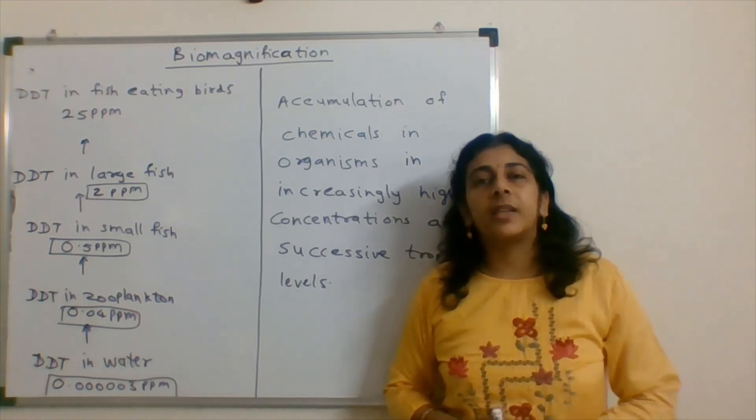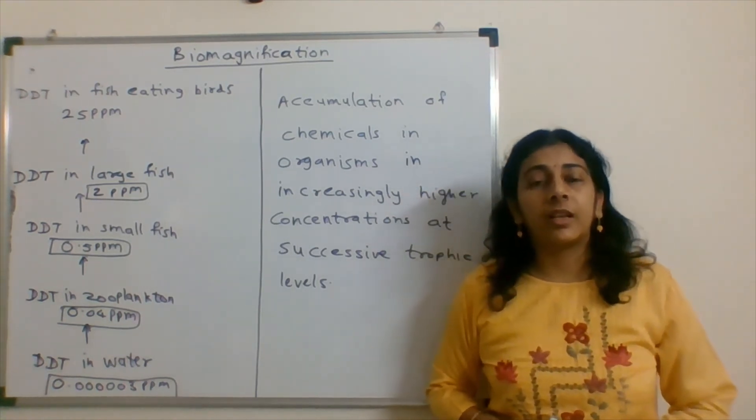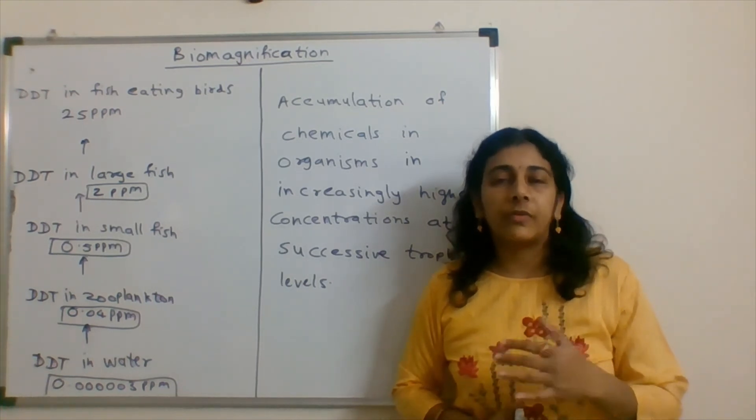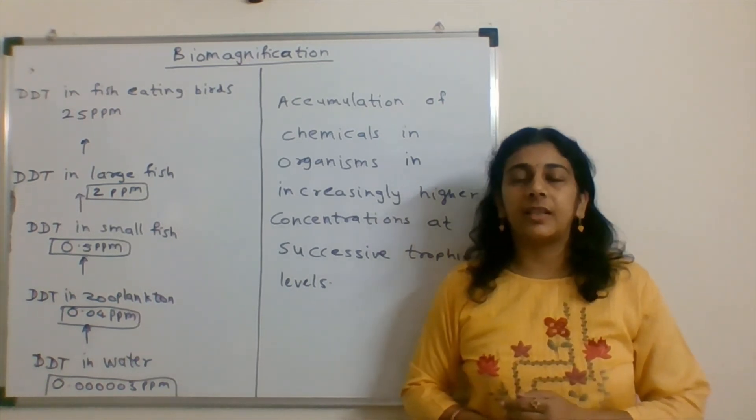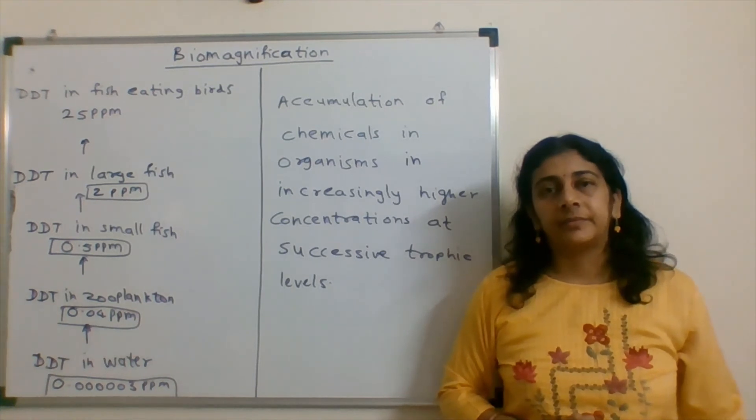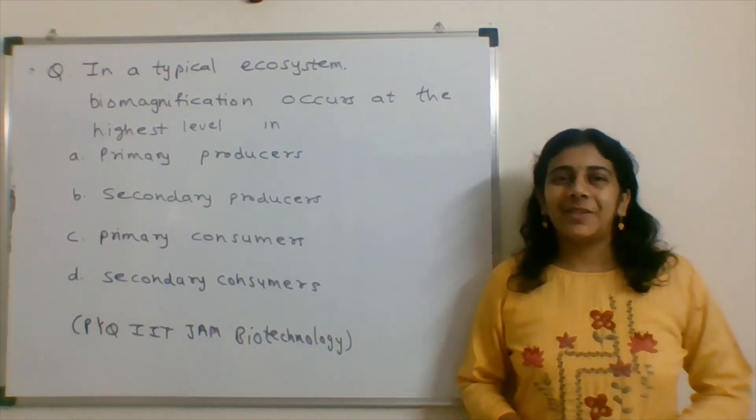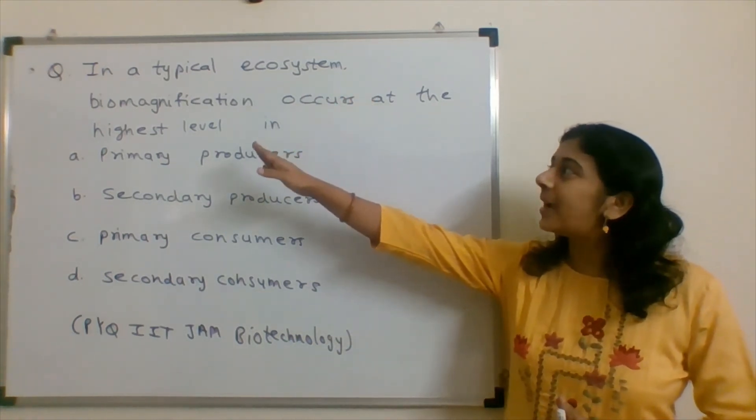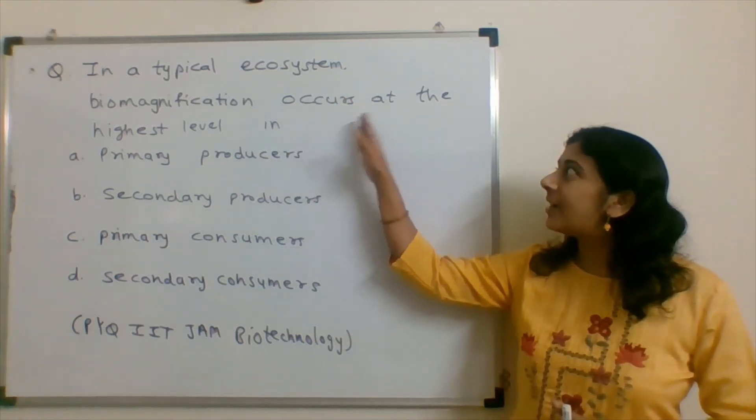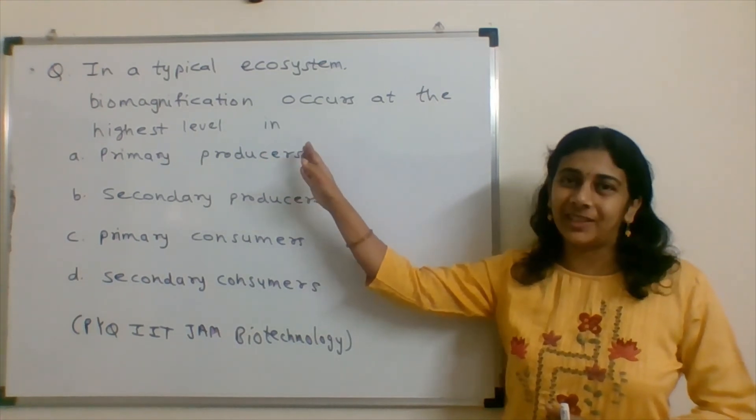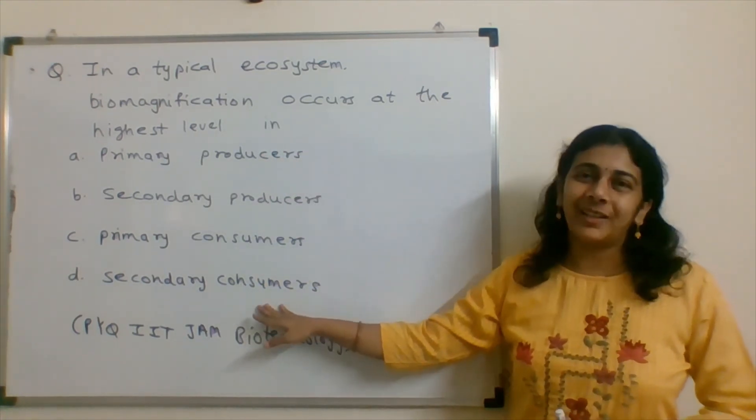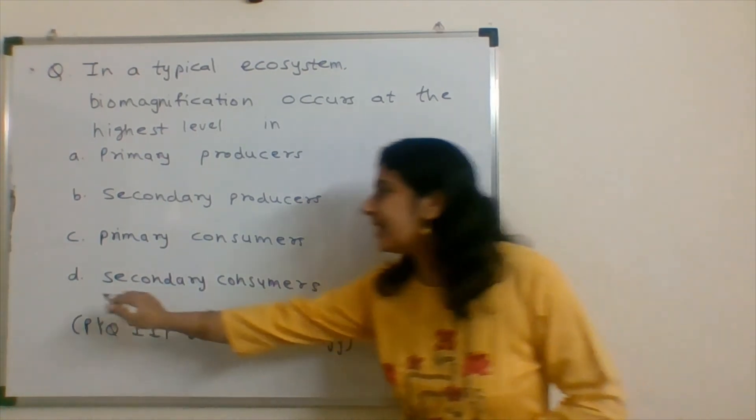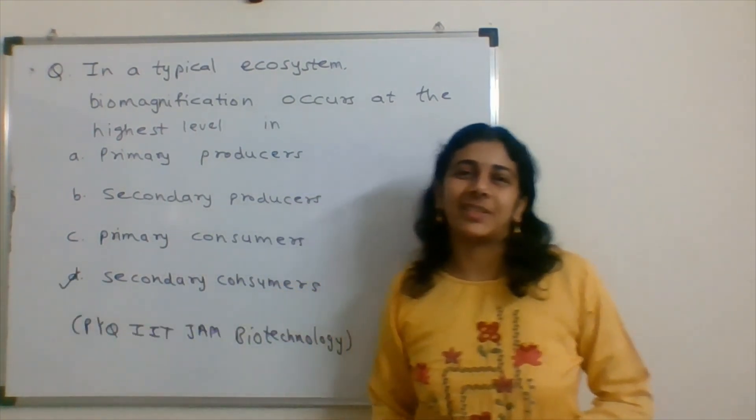With this we can say that in a typical ecosystem, biomagnification occurs at the highest level in secondary consumers. Option D is the correct answer for this question.